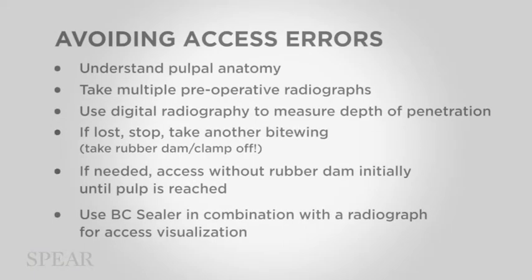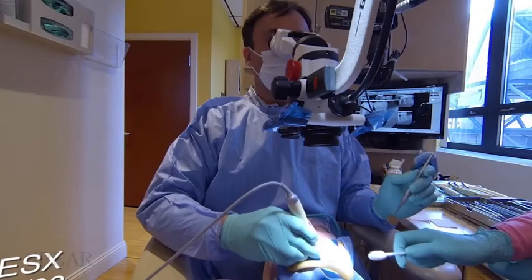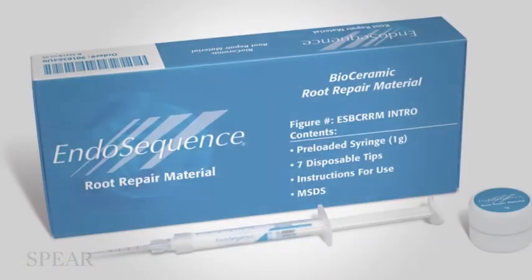One of the tricks for that would be to use your sealer. I use the bioceramic sealer, so it's very easy. BC sealer is very easy to apply to your access preparation when you're kind of lost — you've gone down and can't find the canal. You inject a little bit of that material in there, take a radiograph of the tooth, and you see an impression of the shape of your preparation. Sometimes you can actually get a little squiggly of the BC sealer going into the canal. What's great is that it washes out very easily because it's a hydrophilic sealer — just use your ultrasonic and water, and it washes out immediately, so you don't have a mess for the rest of the procedure.